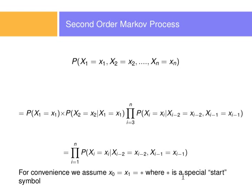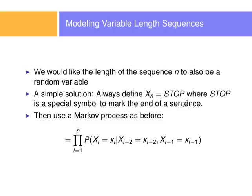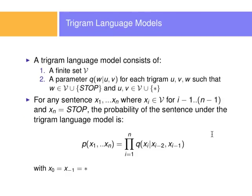I want the length of sequences to be a random variable, so they vary. I will define x of n equals stop, where stop is a special symbol — something like stop in braces — not to be confused with a word. We use the Markov processes as before, where the last xn is the symbol stop, modeling the end of a sentence. Without this, I could model any sequence of words regardless of sentence boundaries, which might not be correct. From this comes the trigram language model — modeling three words: one word depending on the previous two. One word depending on the previous one is a bigram model.